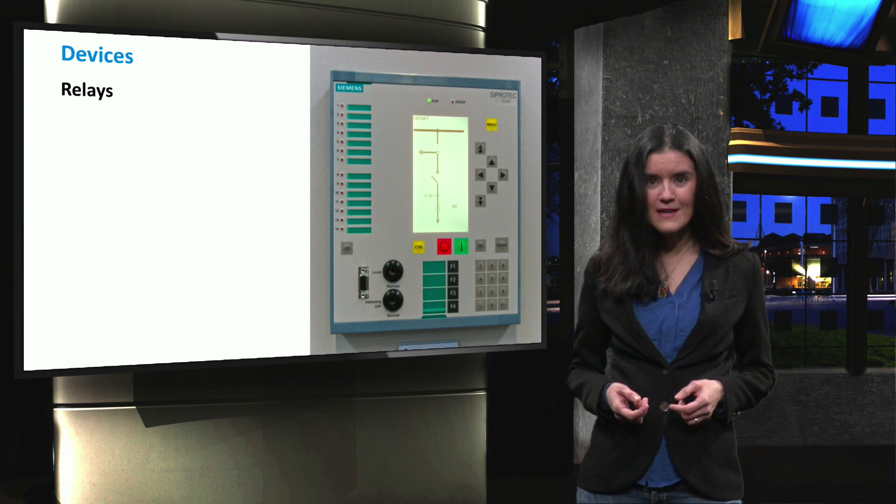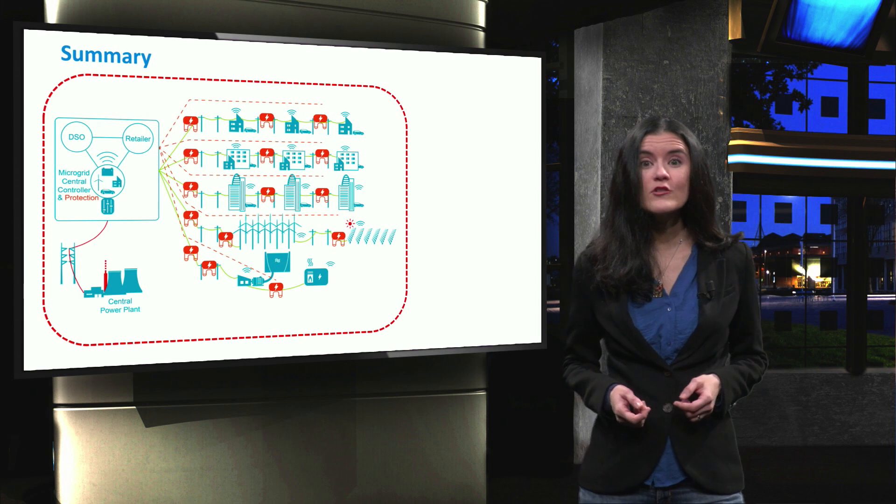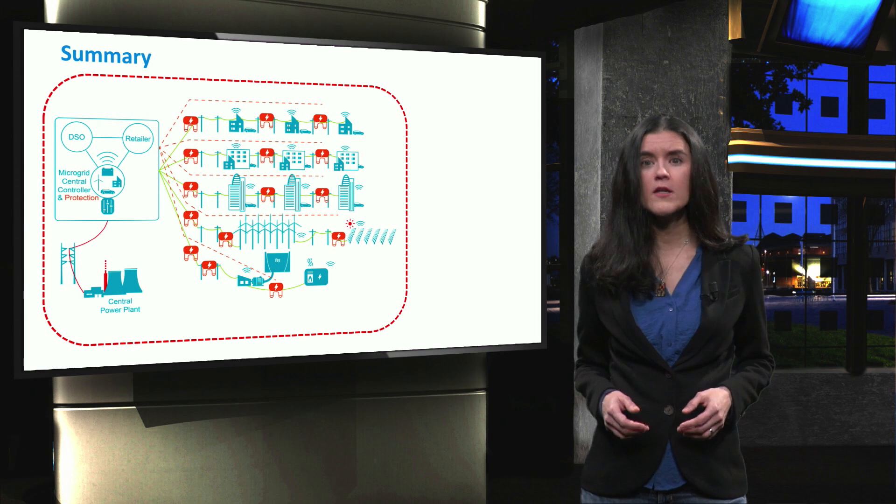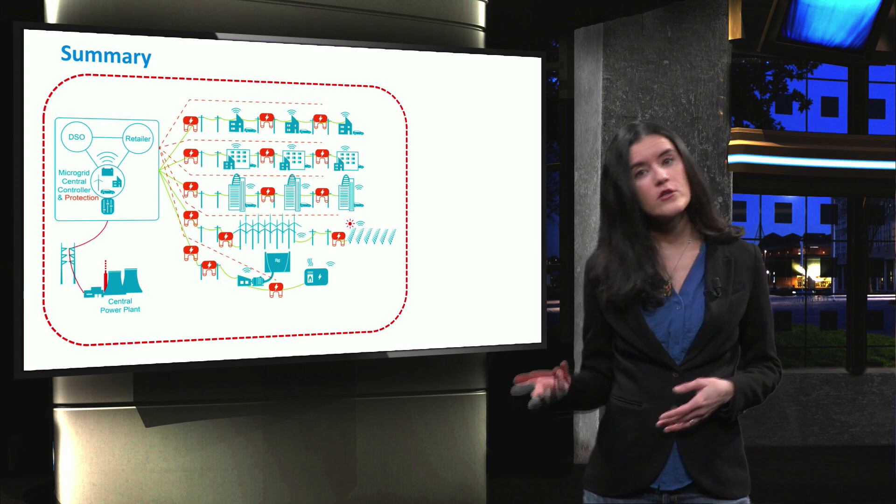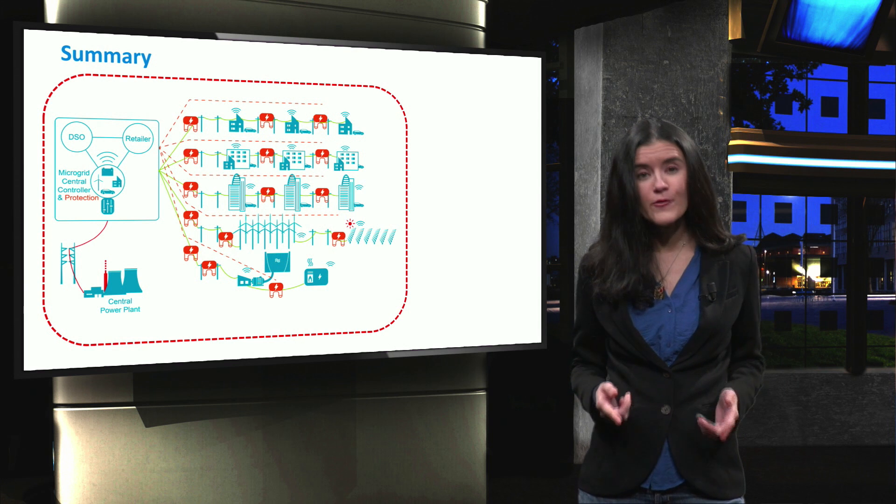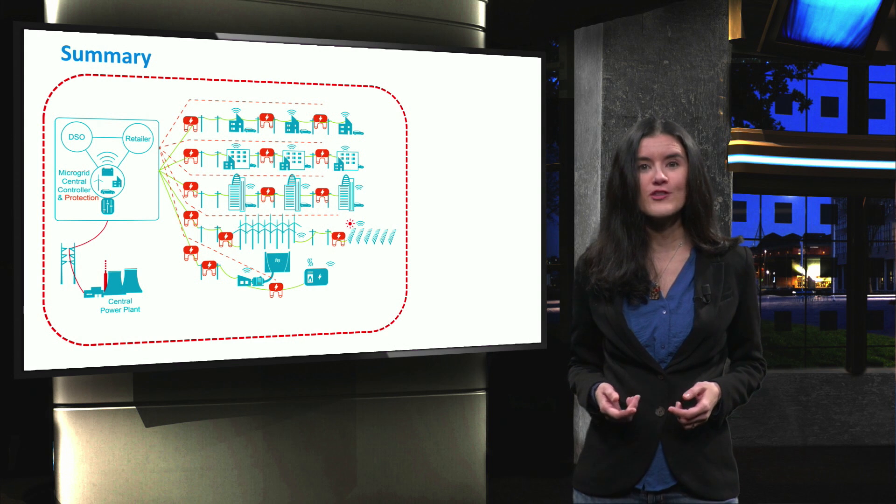So let's summarize this lecture. In this video, we have introduced the main role of protection, which is to stop any abnormal working condition detected in the network, to reduce the impact of faults, and to protect equipment, generators, loads and humans from dangerous current levels.